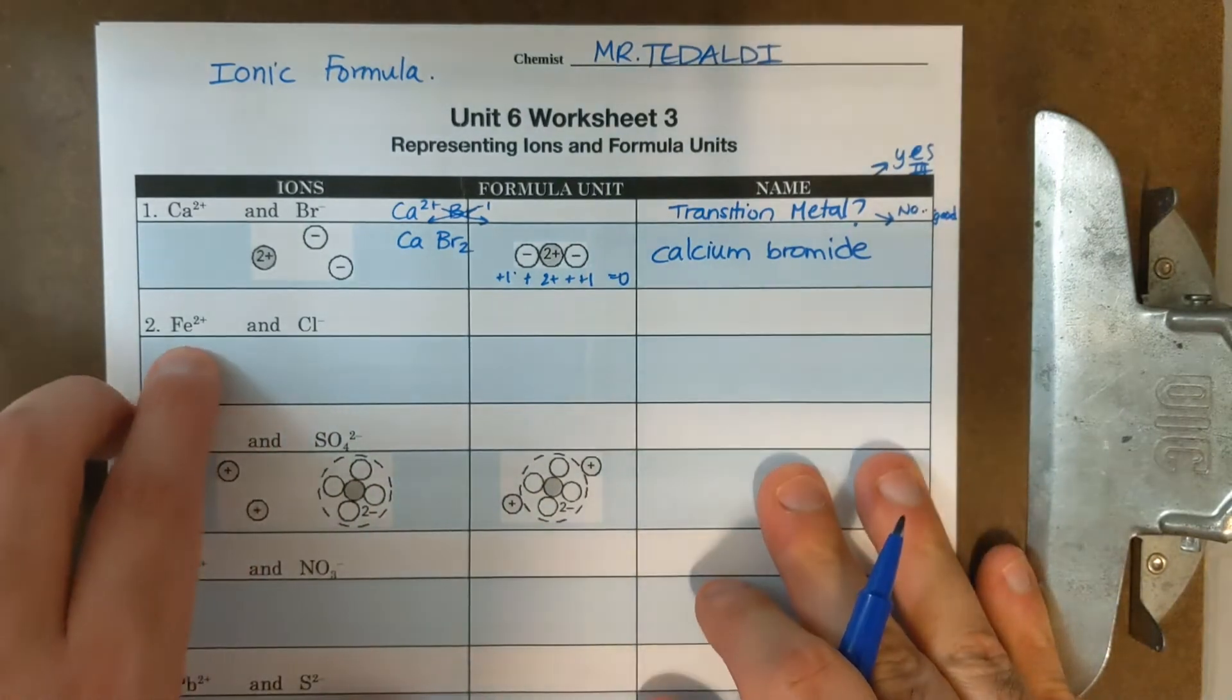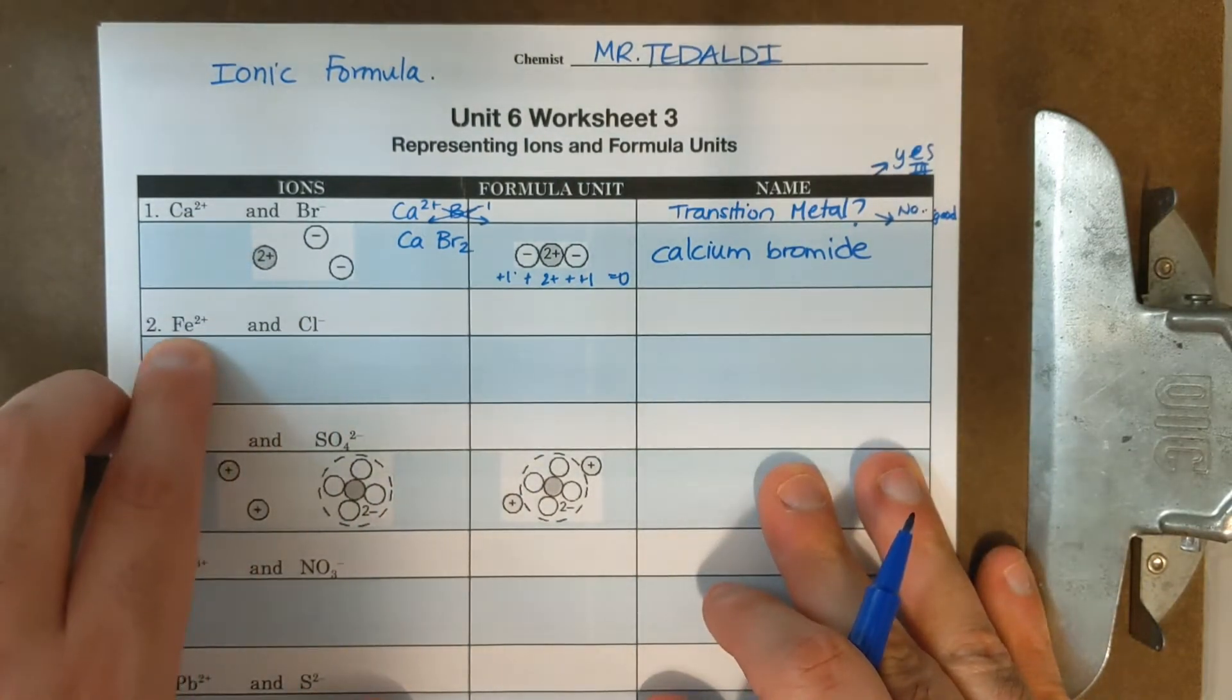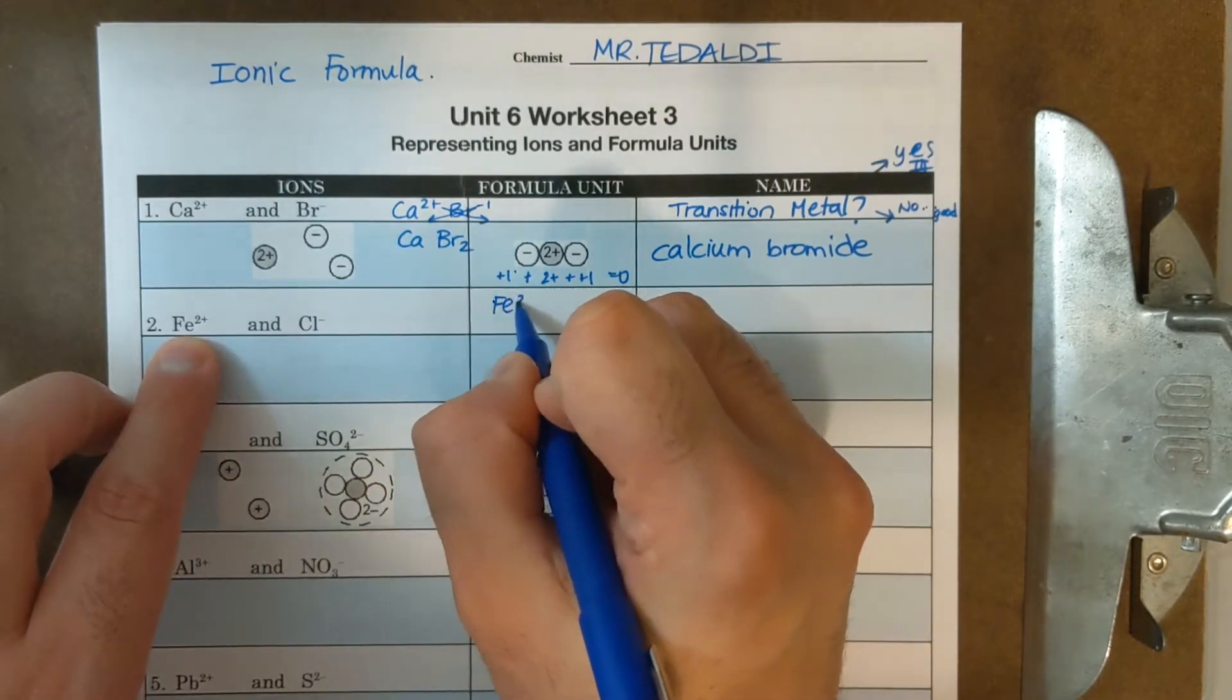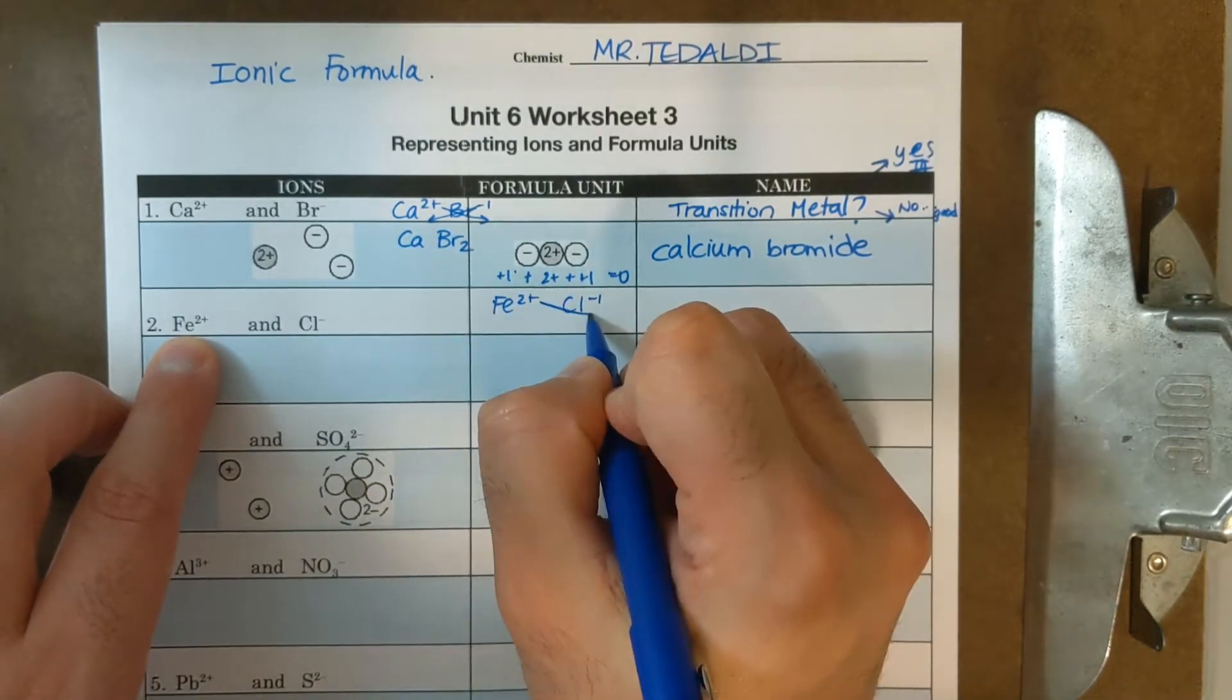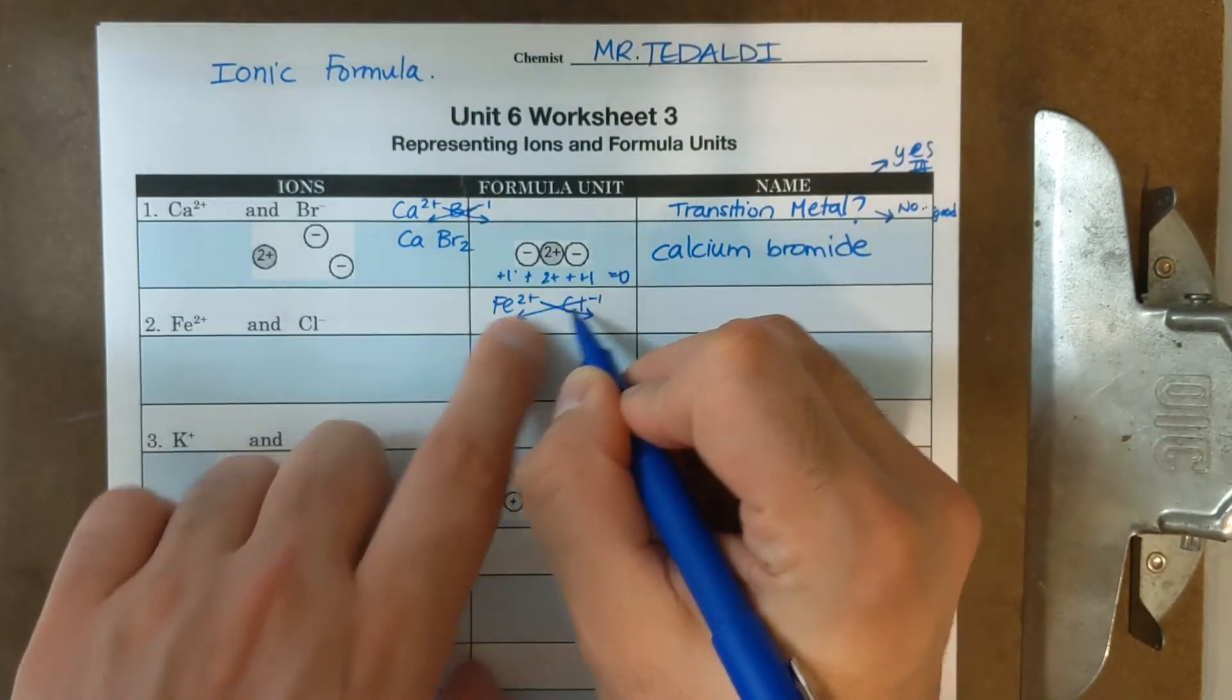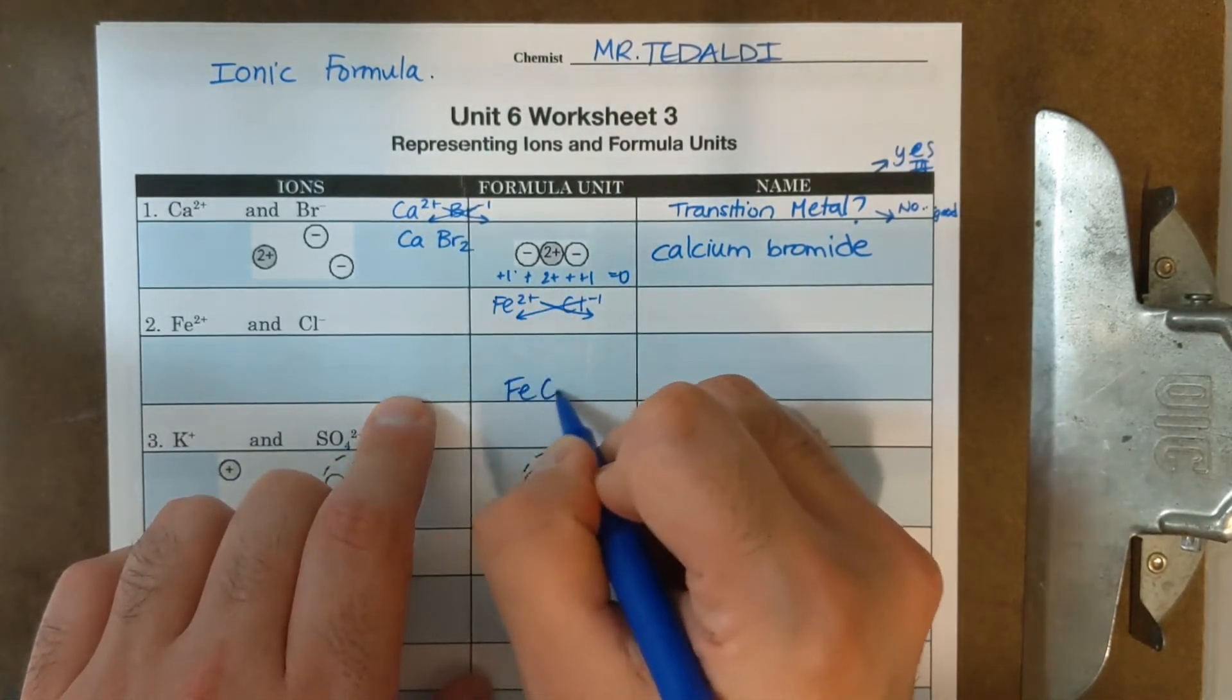So I'm going to call this just calcium bromide with no Roman numerals. Now let's do the next one. The next one is very similar to the first one, two plus and minus one. So Fe two plus and Cl minus one. If I want, I could do the crisscross method to figure out its formula. I'm going to need two Cls, one Fe. Fe Cl two.